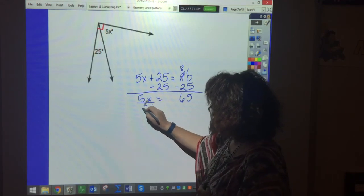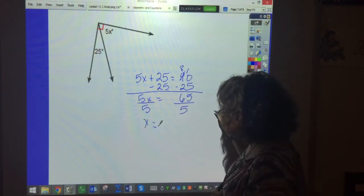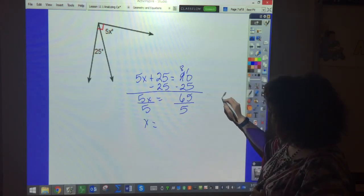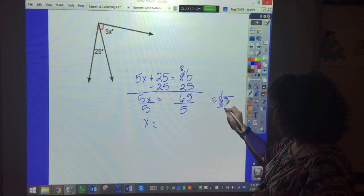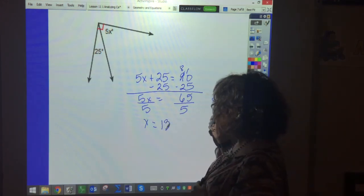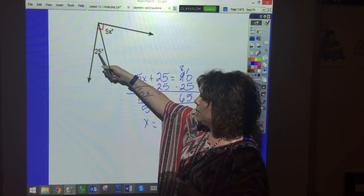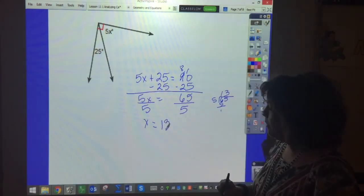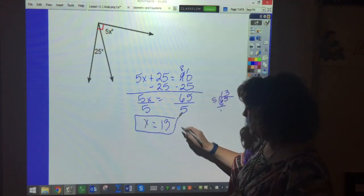So divide by 5, divide by 5. So 13 times 5 is 65. So that would be the total amount there. And divide by 5 is 13. So X equals 13.